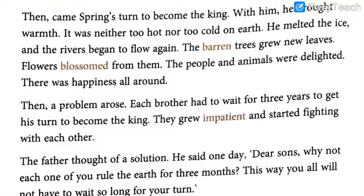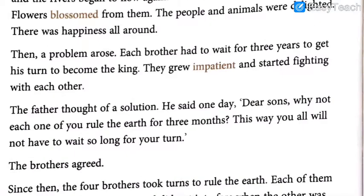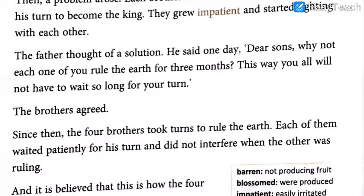Imagine — each brother ruled for 12 months, so every time they had to wait three years to get back their turn. Three years is a very long period of time. They started fighting because of this long wait. They were not able to keep patience; they wanted to rule again within a short time. Obviously, when the brothers are fighting, the father will not like it and will try to find a solution.